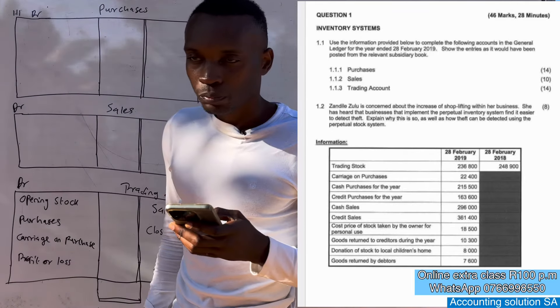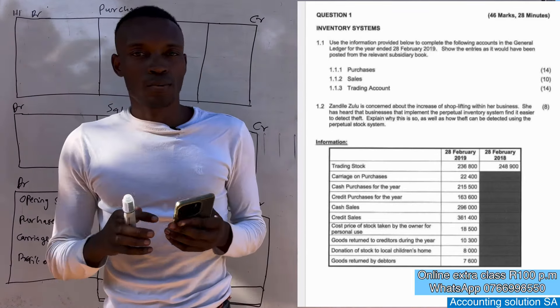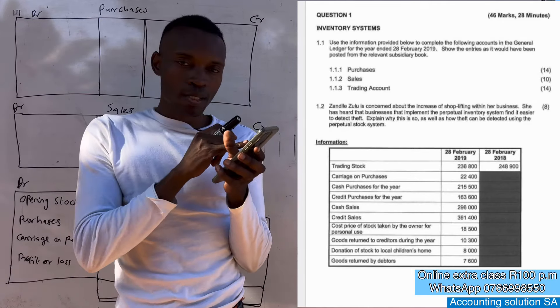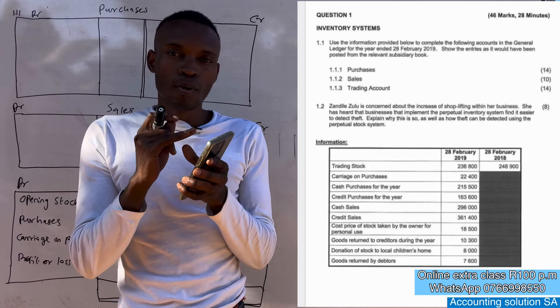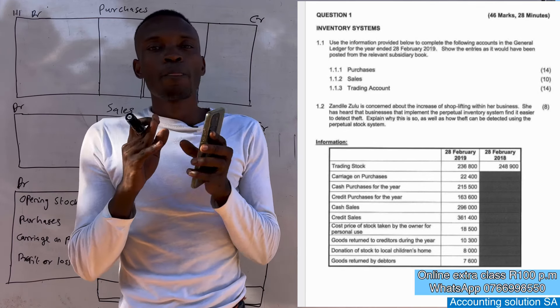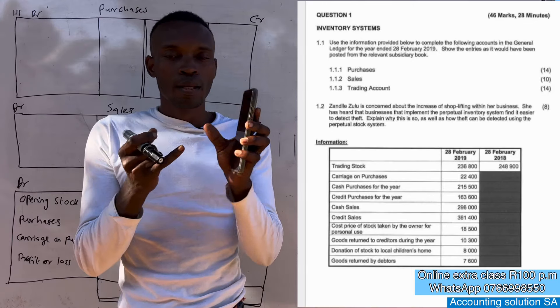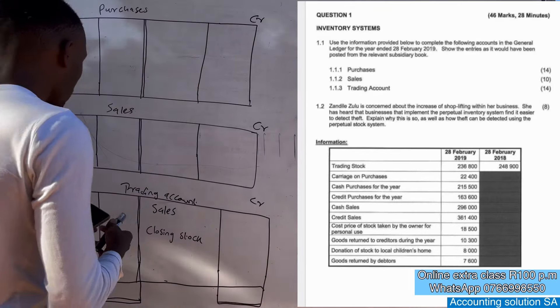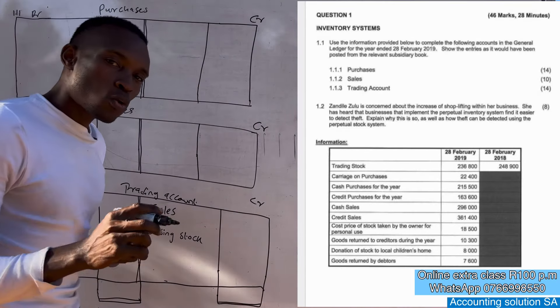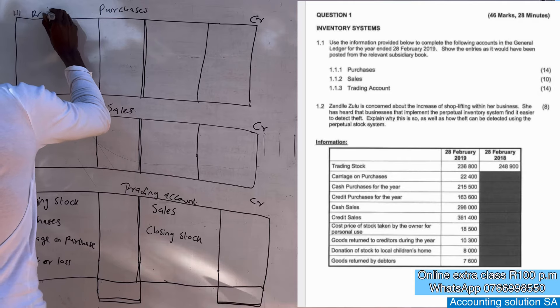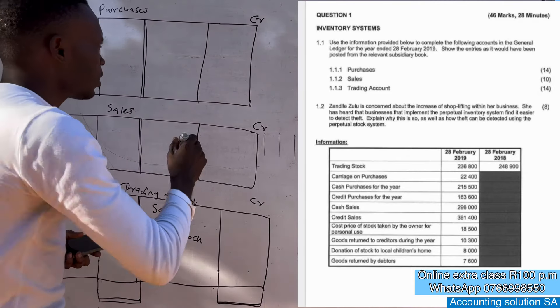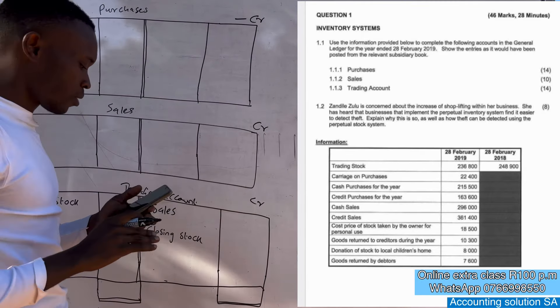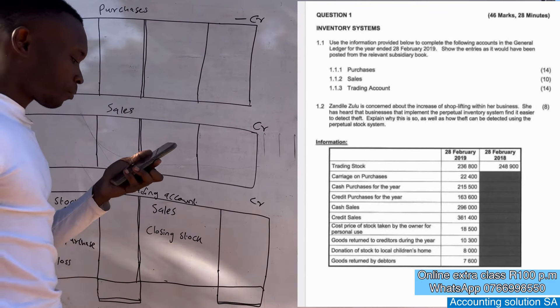Purchase account: when you draw purchase account you only focus on what was purchased by the business in terms of cash and credit. Then the second one, you check what was returned, what was donated and the withdrawal. This is how you do it: when the stock increase, put it this side; when it decrease or goes outside the business, put it this side. Very simple.